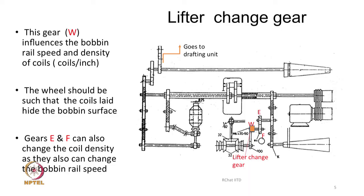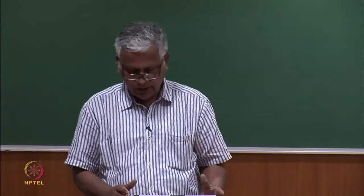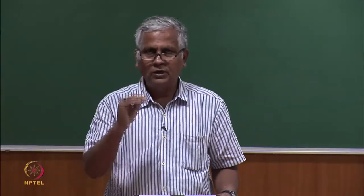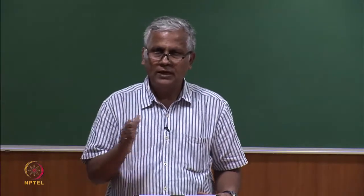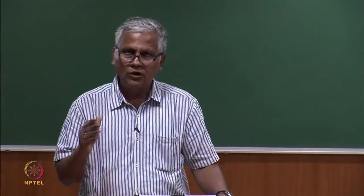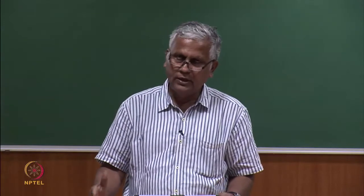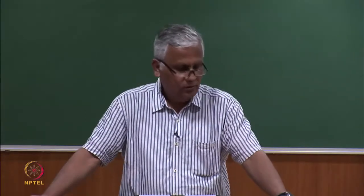Looking at the gearing plan, we need a gear that can change the velocity of the bobbin rail. The bobbin rail velocity remains constant for one particular stroke. Once one layer is formed and you go to the next layer, the velocity of the rail has to change. The velocity of the bobbin rail has to change continuously from the first layer formation to the last layer formation on the bobbin.